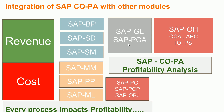On the cost side you have CO-PC, the SAP Product Costing module, which includes CO-PC-P for cost planning. You also have CO-OBJ — Object Cost Controlling — which is a month-end activity you work on along with the PP module. For overheads you have Cost Center Accounting, Activity Based Costing, Internal Orders, and Project Systems, depending on the type of industry or activity involved.